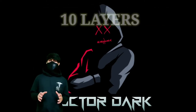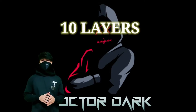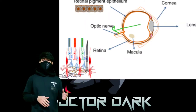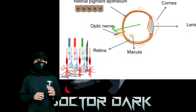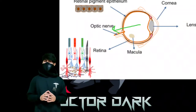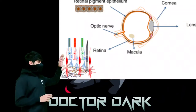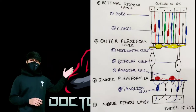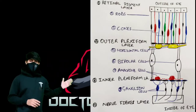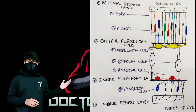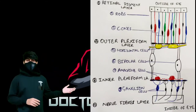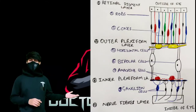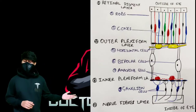There are a total of 10 layers in the retina. If we go from outside to inside — that is from the vitreous chamber towards the center — the first layer is the retinal pigment epithelium. As you can see on the screen, the 10 layers are: retinal pigment epithelium, rods and cones, outer plexiform, horizontal cell layer, bipolar cell layer, amacrine cells, inner plexiform layer, ganglion cell layer, and the last one is the nerve fiber layer.